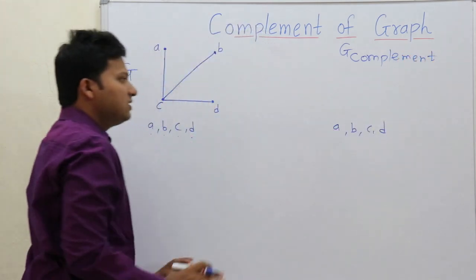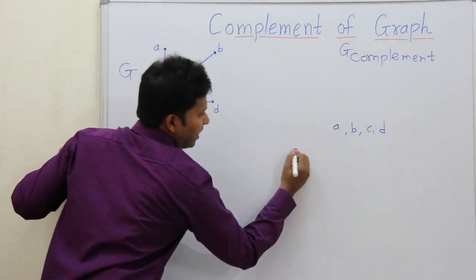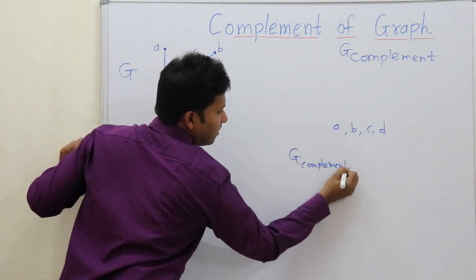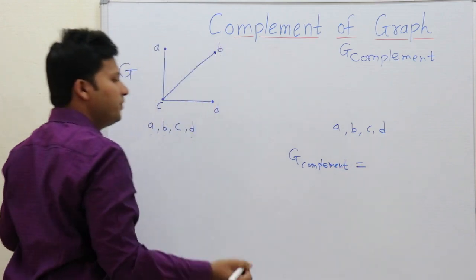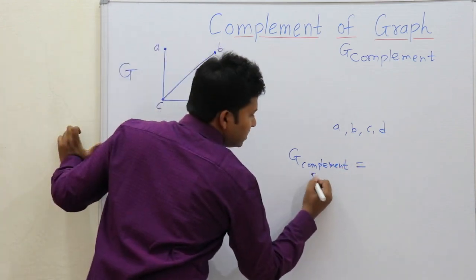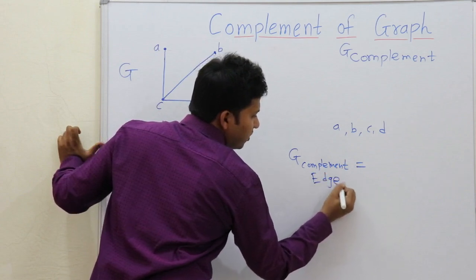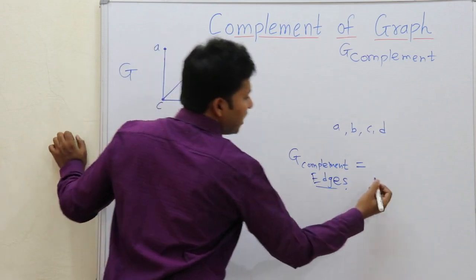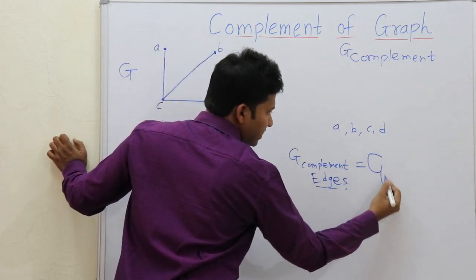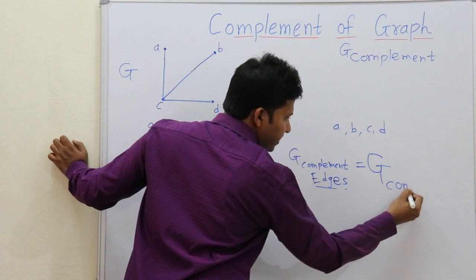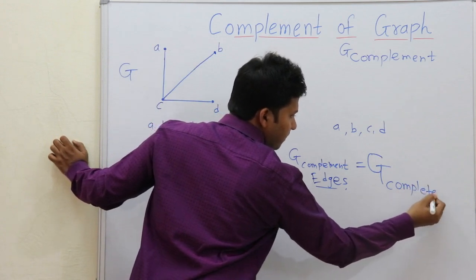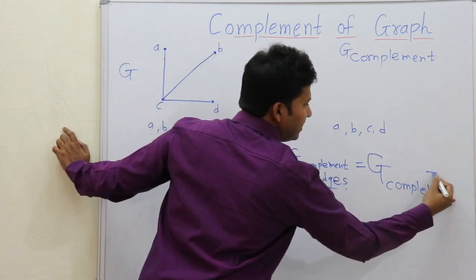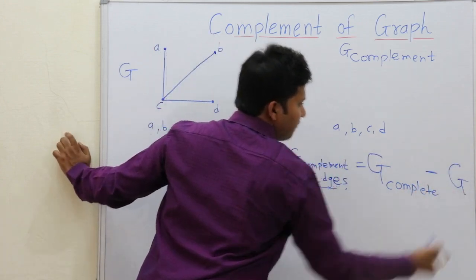Now what is the complement of a graph? The complement of a graph is defined in terms of edges. Edges in the complement of a graph is equal to the edges in the complete graph for the same set of vertices A, B, C, D, minus the original graph edges.